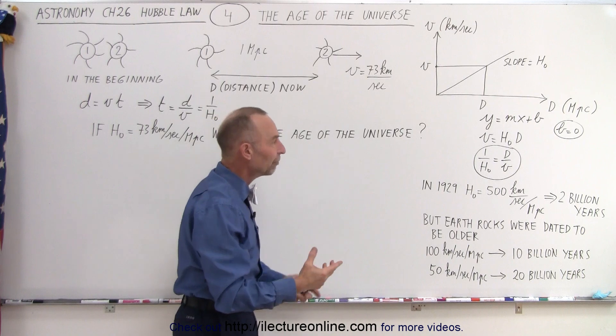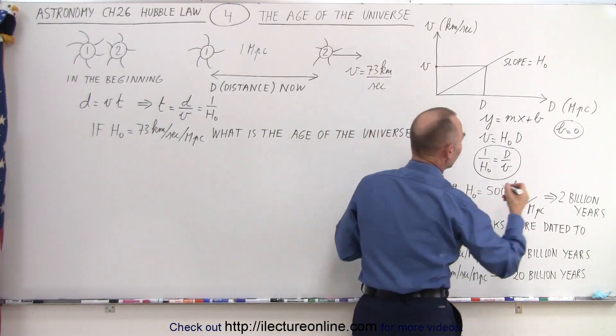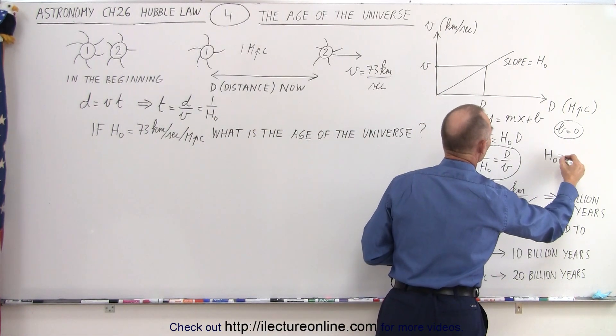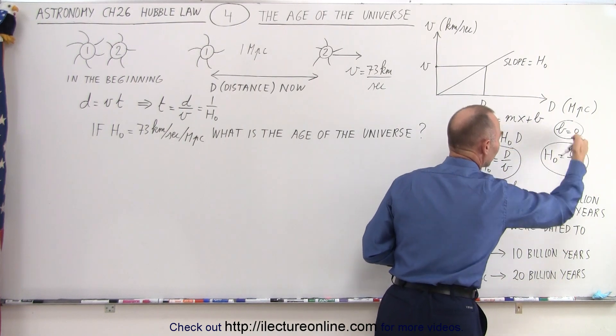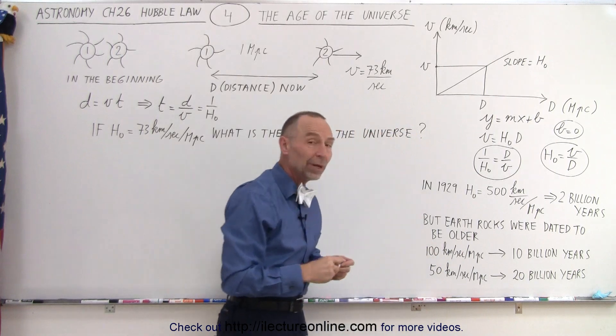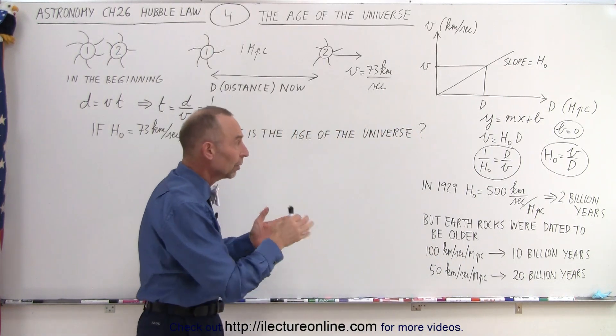If we then solve for the Hubble constant, we can see that H₀ can be written as v over d. In other words, this is the relationship between the velocity, the distance, and the Hubble constant.